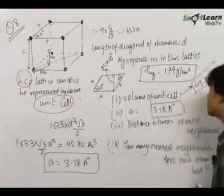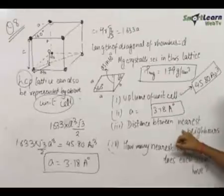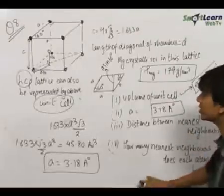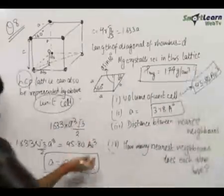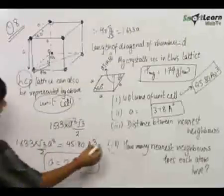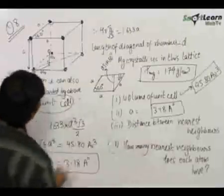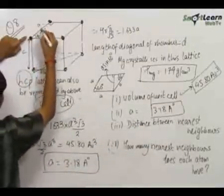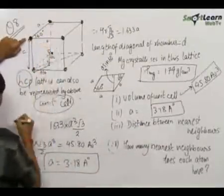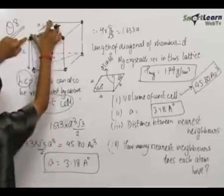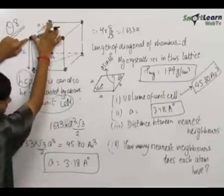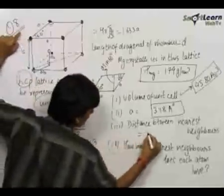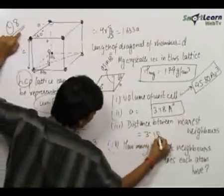The third part asks for the distance between nearest neighbours. In this hexagonally close-packed structure, these two neighbouring atoms are in contact. Therefore, the distance between nearest neighbours equals A, which is 3.18 Å.